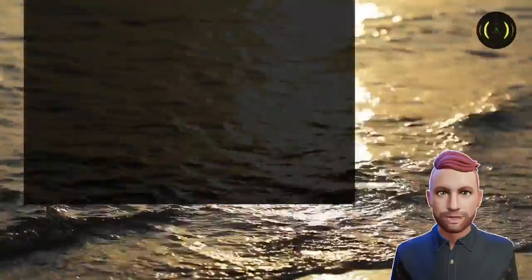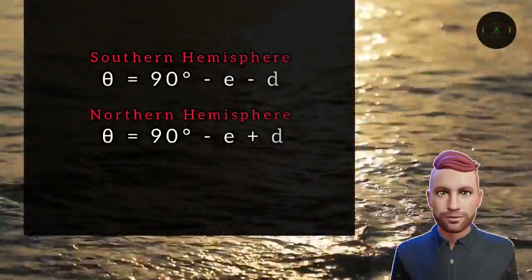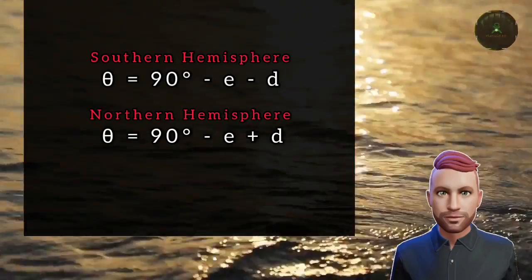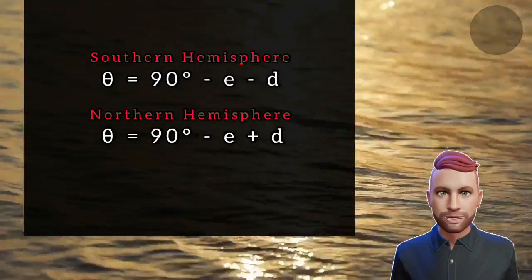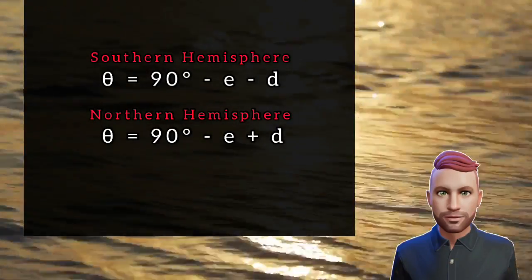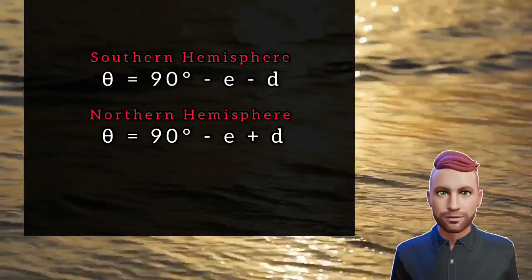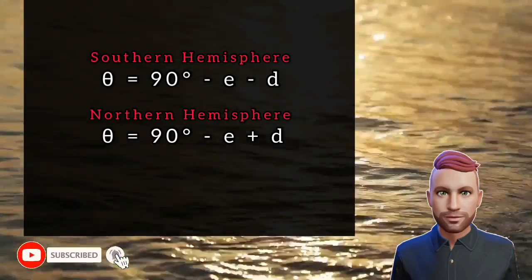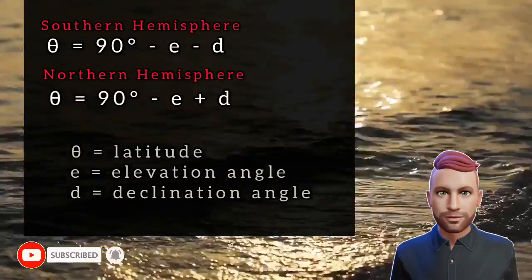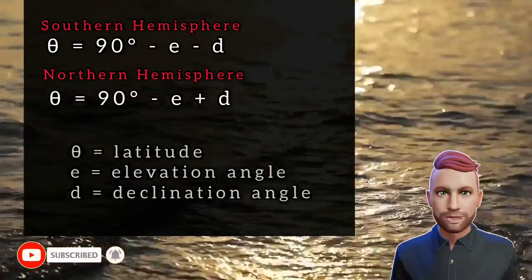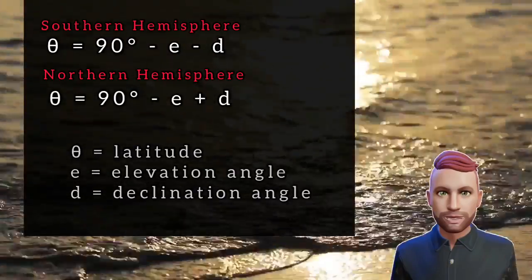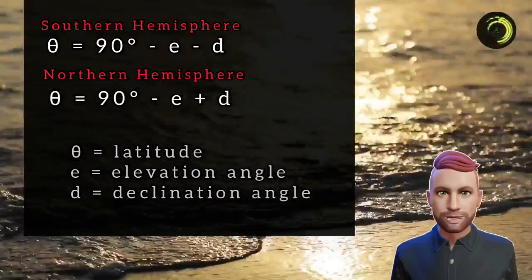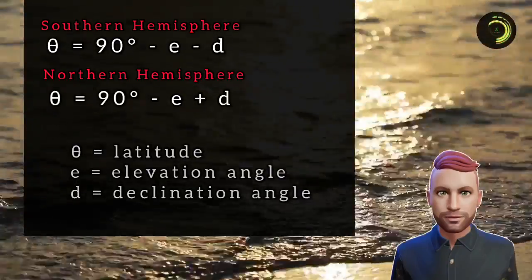So what is this equation? Well, there are actually two: the Southern Hemisphere equation and the Northern Hemisphere equation. The reason for this is because it works on the declination of the Sun at a certain time of year. First of all, Theta equals your latitude, E equals your elevation angle, and D equals your declination angle.